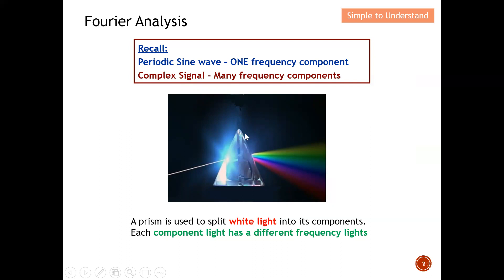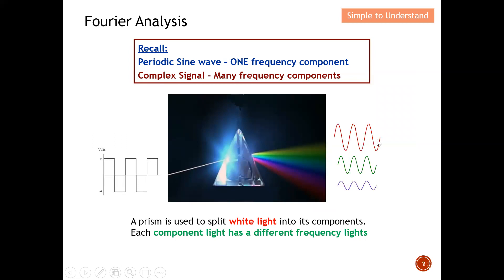Let's look at this diagram. This is what we understand from secondary school — a prism is used to spread white light into its components. For example, white light entering a prism spreads into rainbow colors. Similarly, a complex signal such as a square wave, when passed through this 'prism,' splits into different frequency components — each like different colors having different wavelengths. We can make use of Fourier series to represent this complex signal.